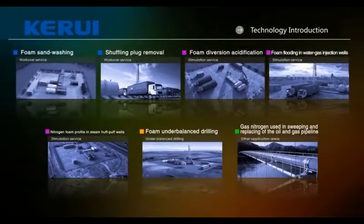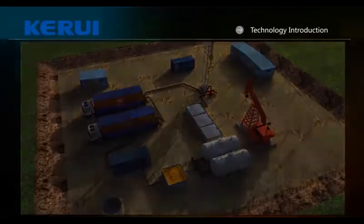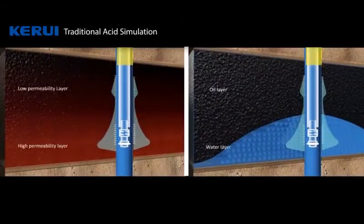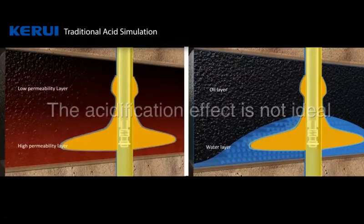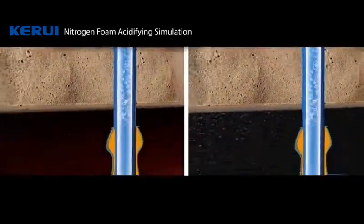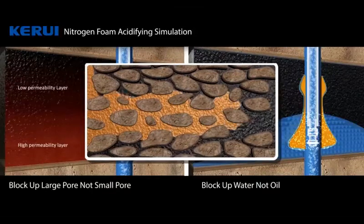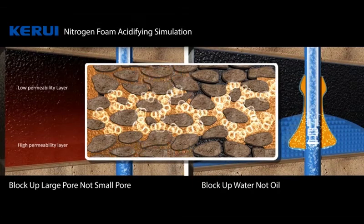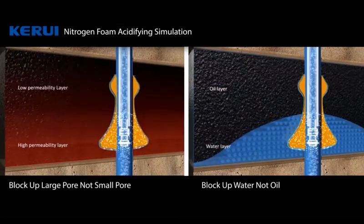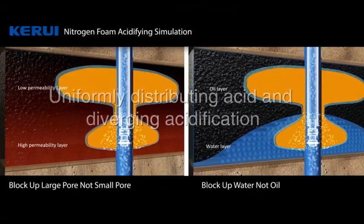Foam diversion acidification: conventional acidification results in heterogeneous formations where water channeling, re-acidizing, and leakage are unsatisfactory. Foam acid has acidification capacity and foam characteristics simultaneously — plugging large pores while treating small pores, and plugging water zones without plugging oil zones. It is selective across different permeability formations and oil-water layers to achieve acid-distributing and diversion acidizing. The slow reaction speed of foam acid enables deep reservoir acidification.